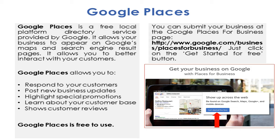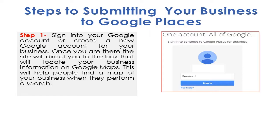You're able to download that and then click on each link and follow along with the video to show you how to get started. So here's how you submit your business to Google Places. Number one: sign in to your Google account or create a new Google account for your business. Once you're there, the site will direct you to a box that will locate your business information on Google Maps, which will help people find a map of your business when they perform a search.